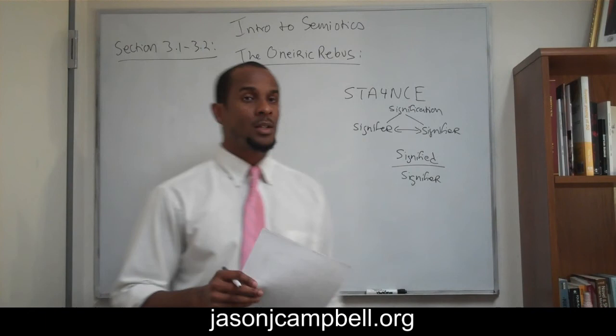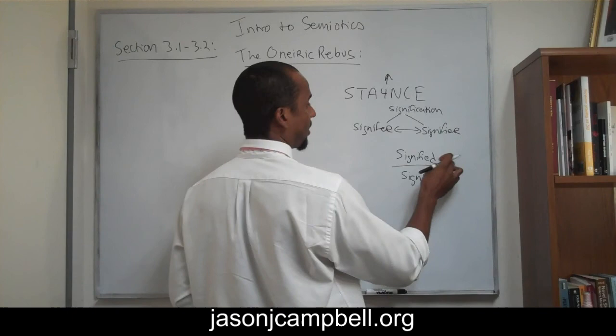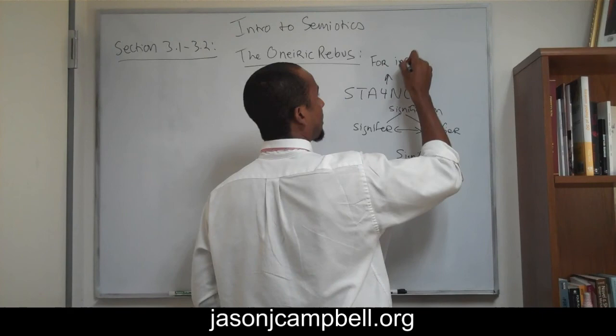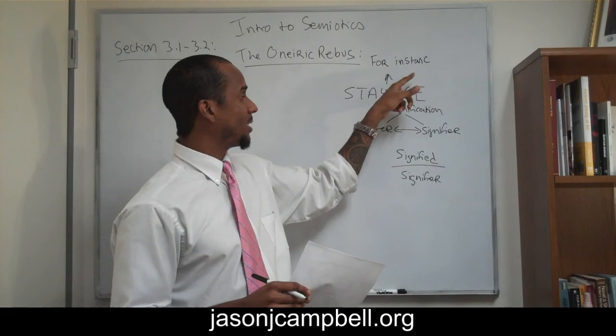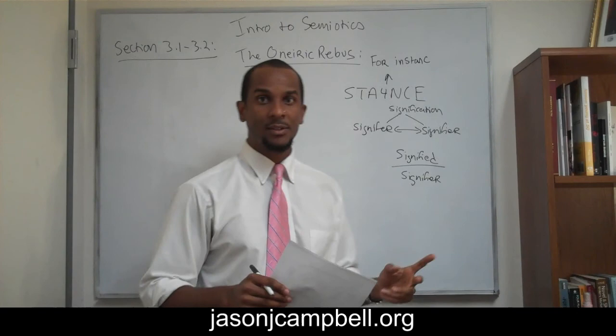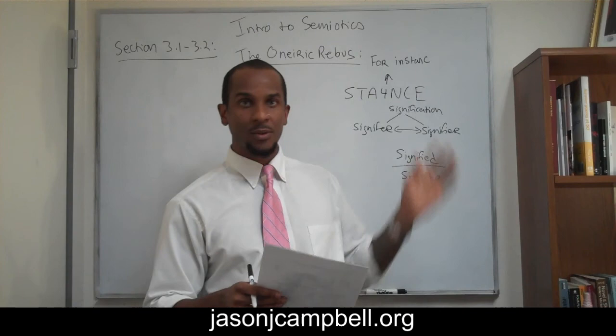The role of the rebus: if we look at S-T-A-4-N-C-E as a signifier, we recognize that what it attempts to signify — its signified — is 'for instance': I-N-S-T-A-N-C-E. The number four is inside of S-T-A-N-C-E — 'for' inside of 'stance.' So 'for instance' is signified by its signifier S-T-A-4-N-C-E. This is a very simple rebus; there are far more complicated ones.